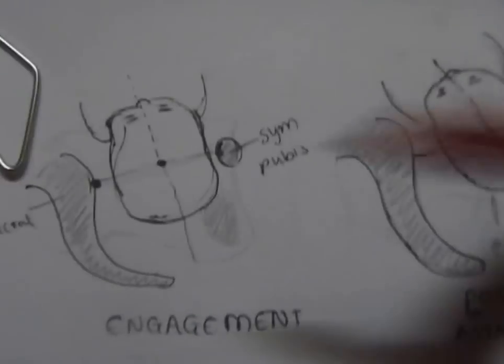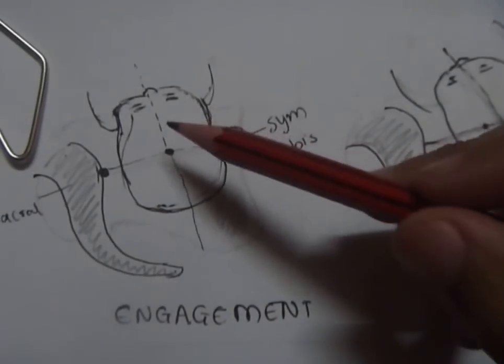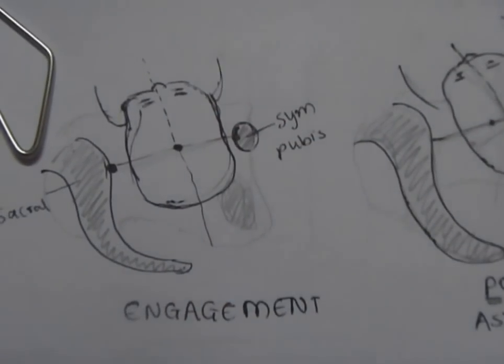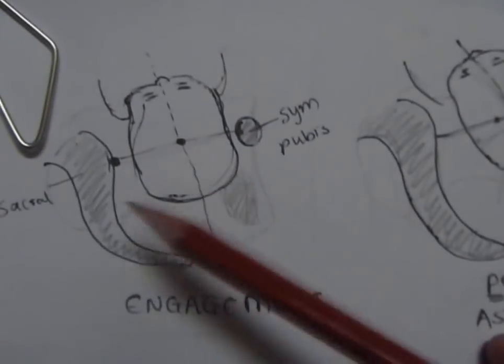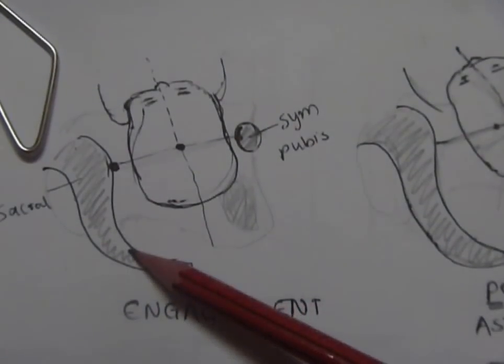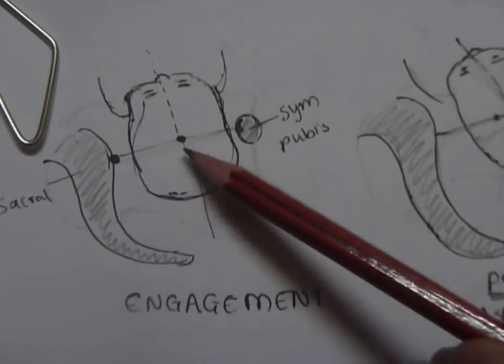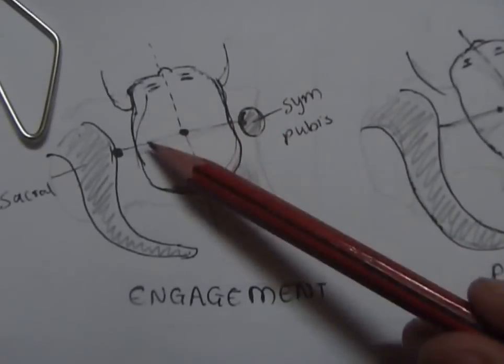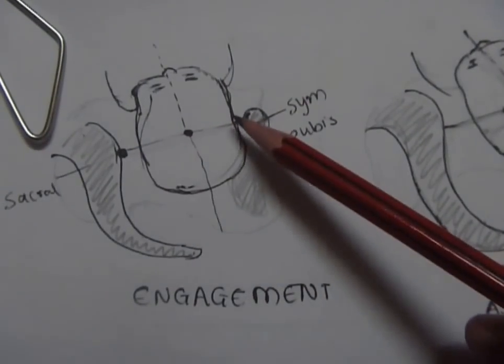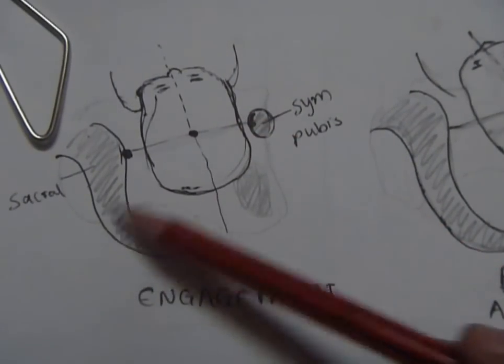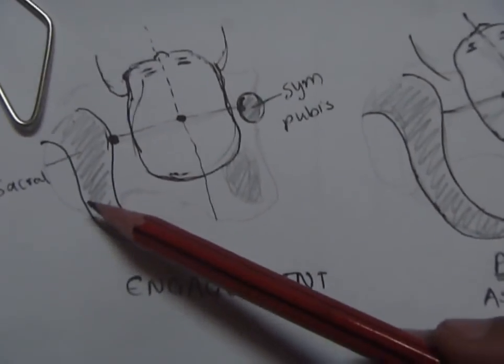What I have drawn out here is a fetal head which is descending through the pelvis. This is the symphysis pubis and this is the sacrum, and this is a point roughly midway between the symphysis pubis and the sacrum, that is the front and the back of the pelvis.